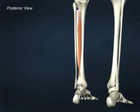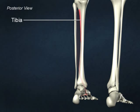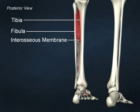The origins of tibialis posterior are from the lateral surface of the posterior tibia, the shaft of the medial fibula, and the interosseous membrane.